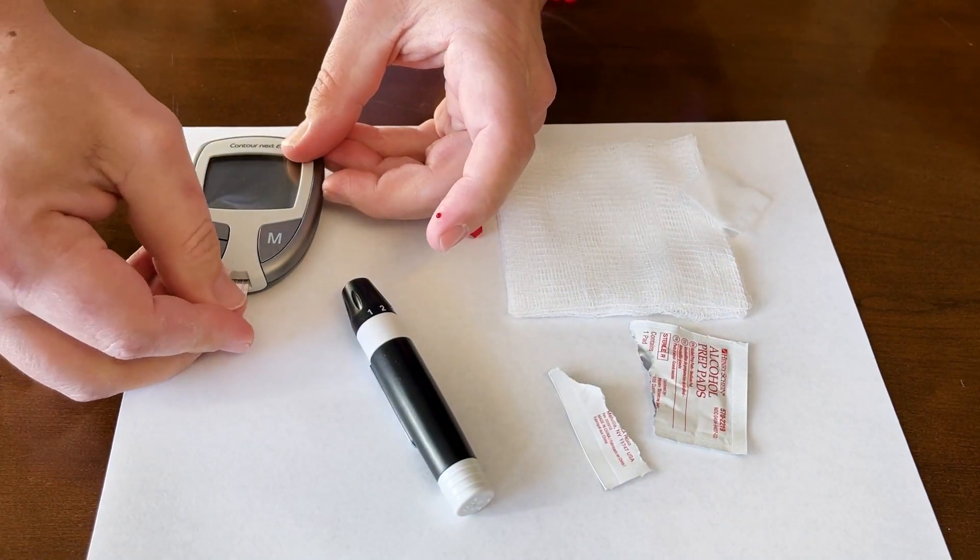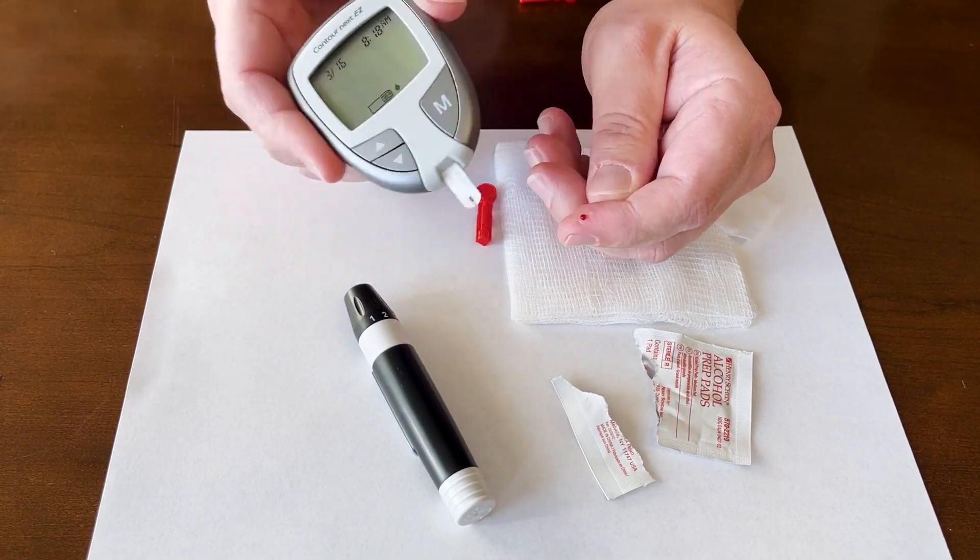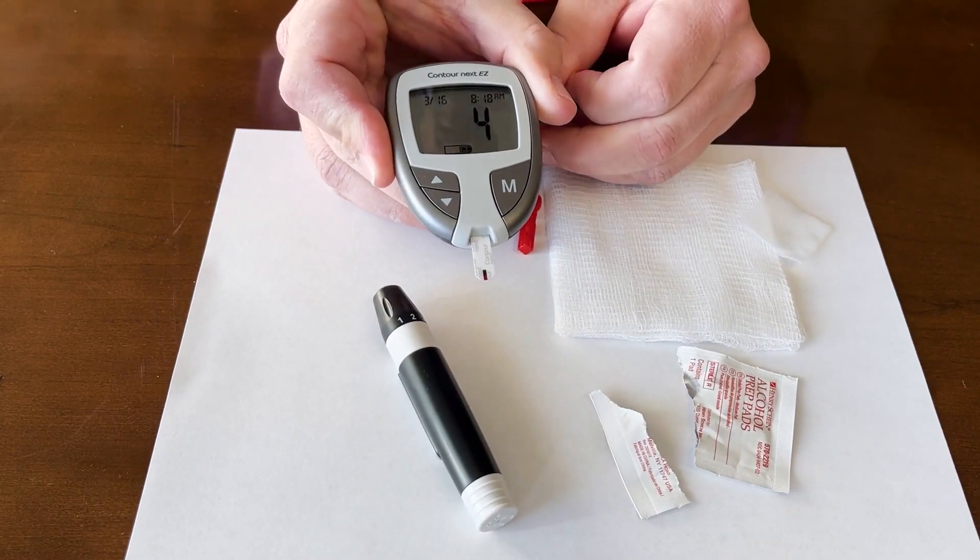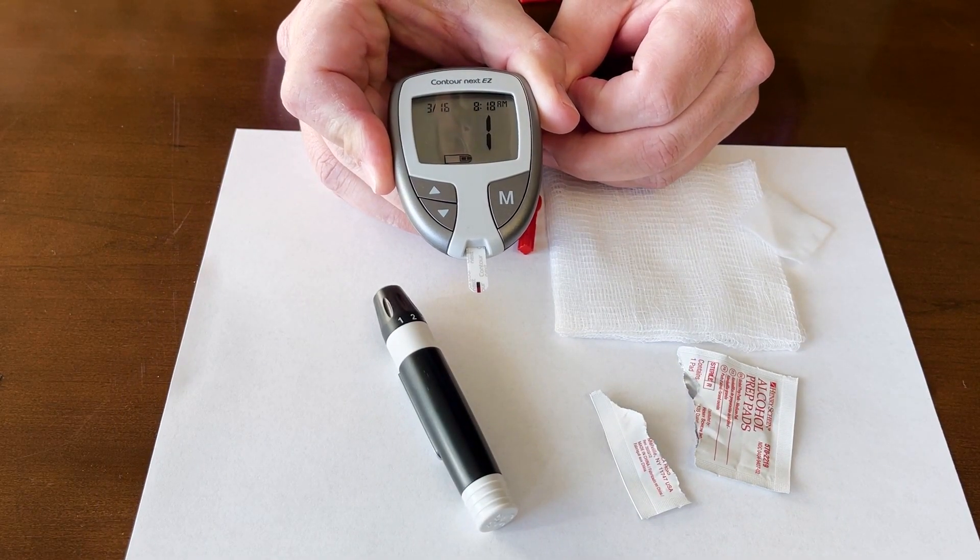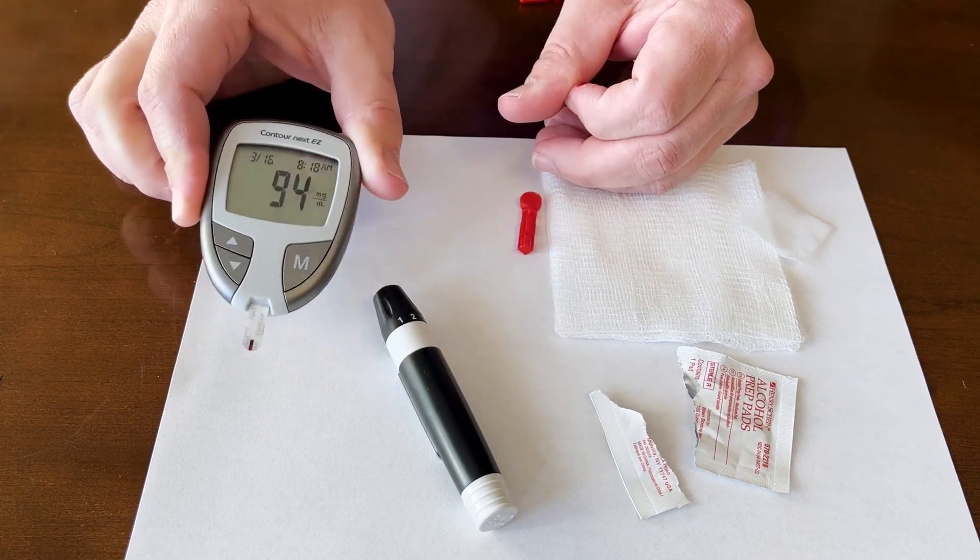I'm going to put it in my meter. Just like that. You'll see the meter will self-turn on. Take that blood. You'll see that the blood will go right into the strip. And there's my blood sugar.